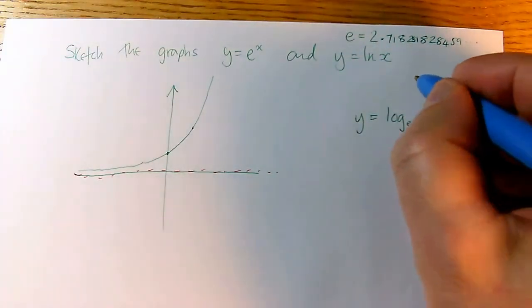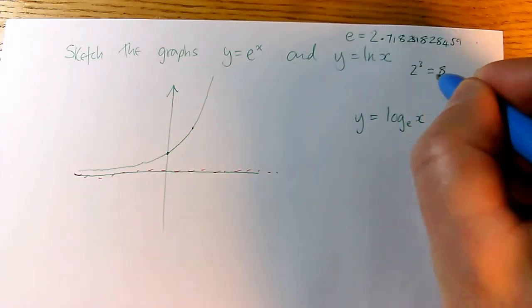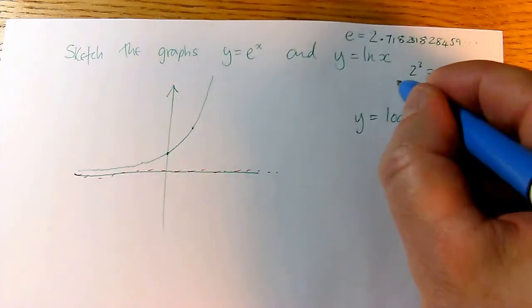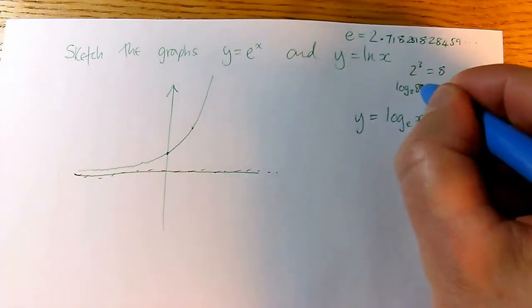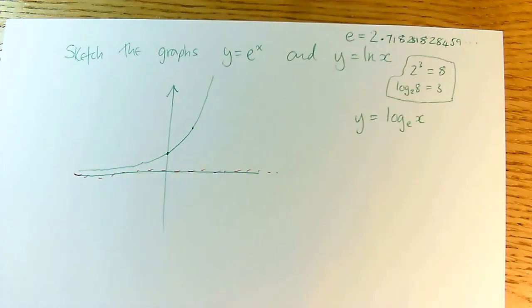Well, you know about ordinary logs. You know that 2 cubed equals 8. So as a log, that same statement becomes log to the base 2 of 8 equals 3. So that's the concrete example of what logs do.